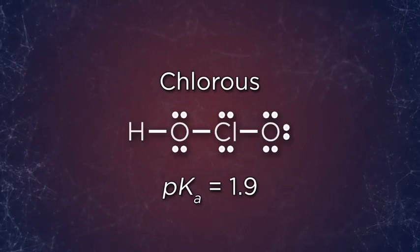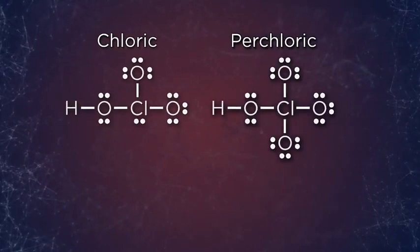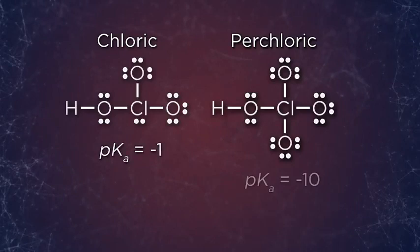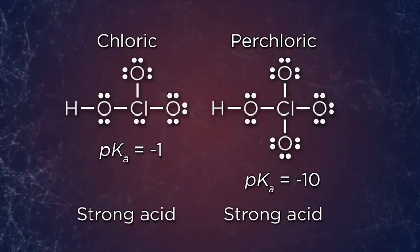Add another oxygen to make chloric acid and yet another to make perchloric acid. And the effect is amplified each time, creating acids with pKa values of negative 1 and about negative 10, respectively. In fact, both of these would be considered strong acids by rule because their pKa values are negative, meaning that practically every molecule in a sample of these acids would be ionized in solution.